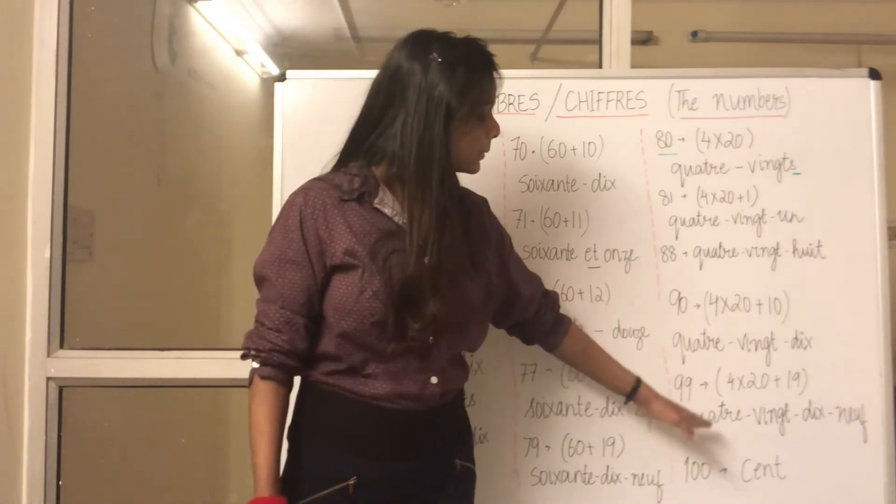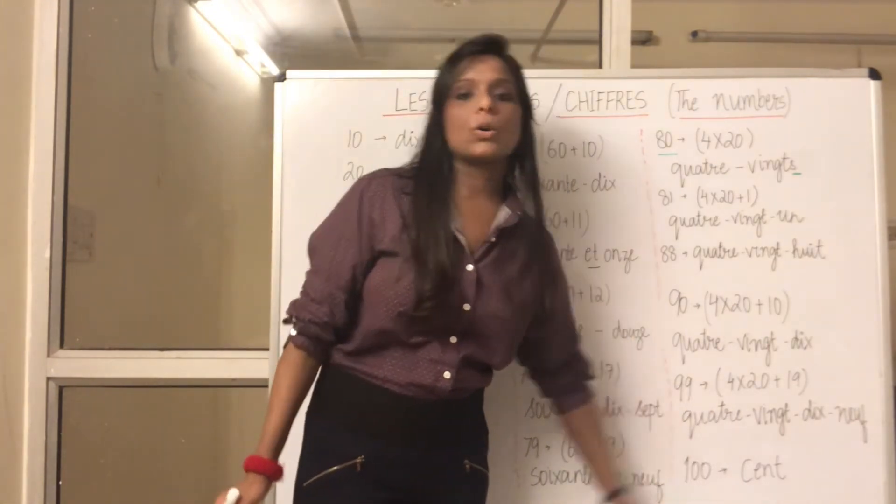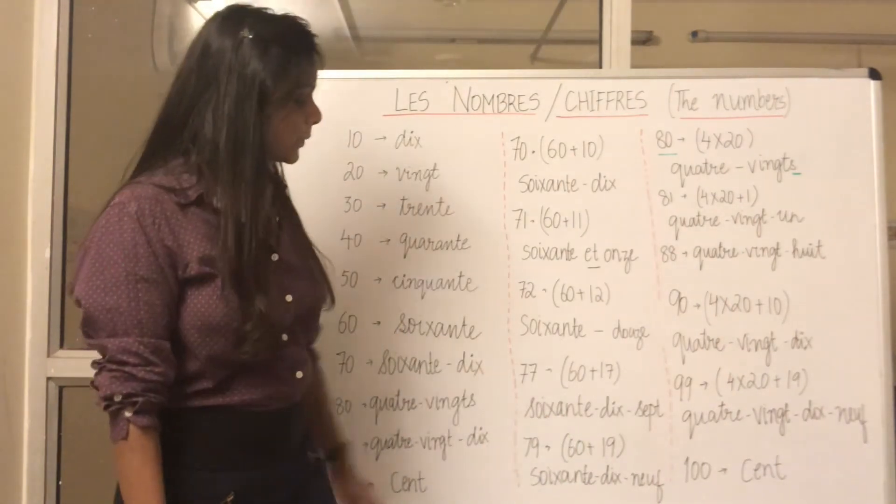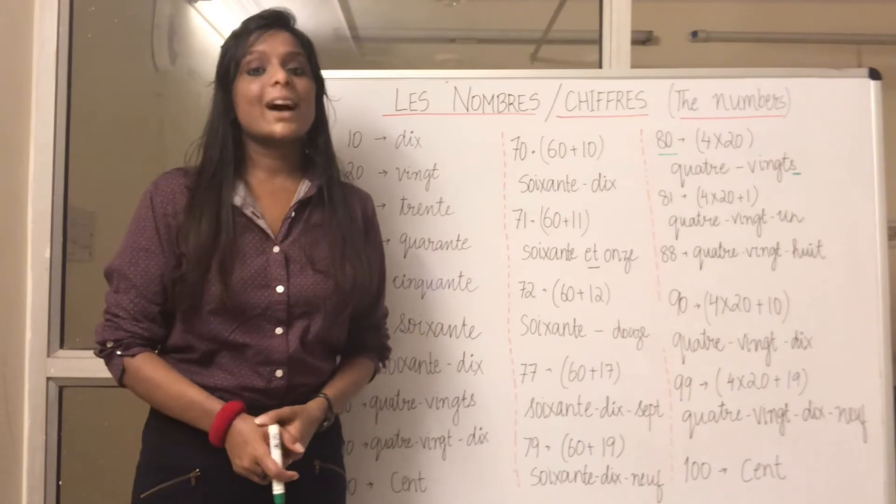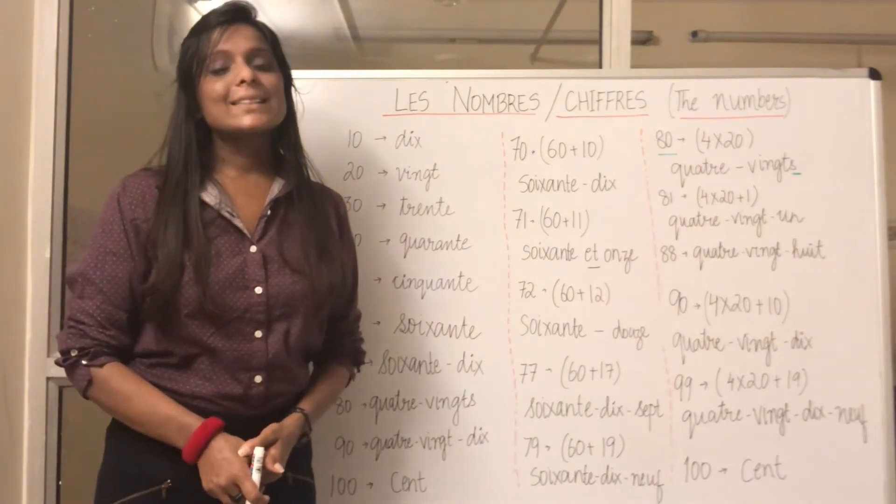Now, 100 is cent. So, ce sont les nombres cardinaux, the cardinal numbers, deux, 0 à 100, from 0 to 100.